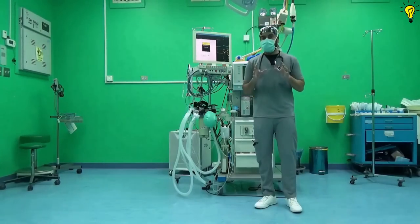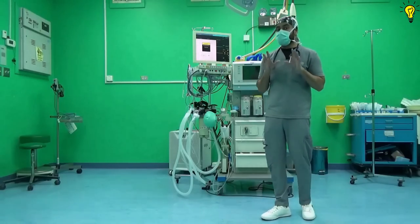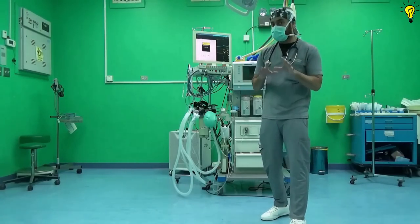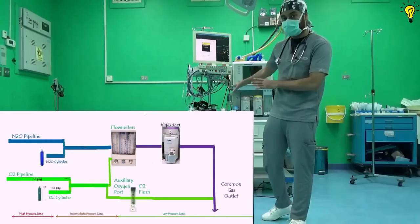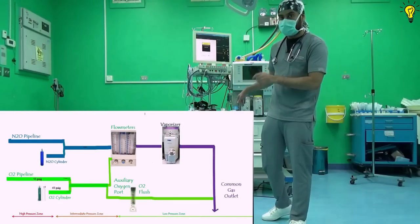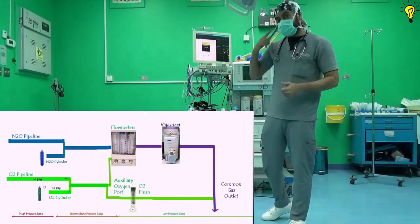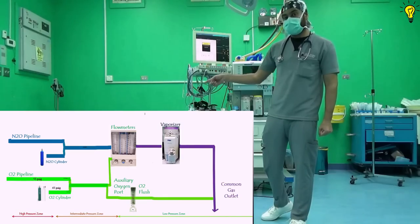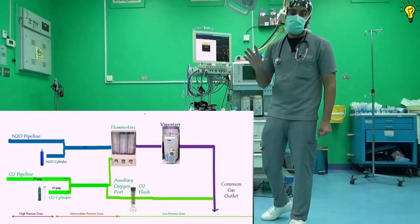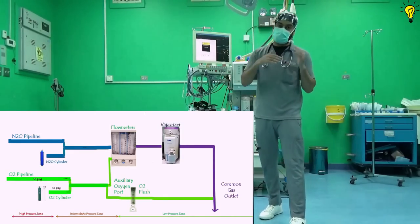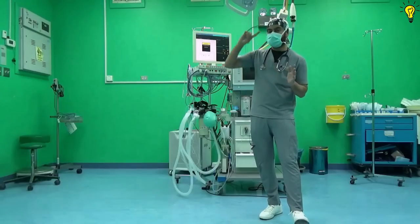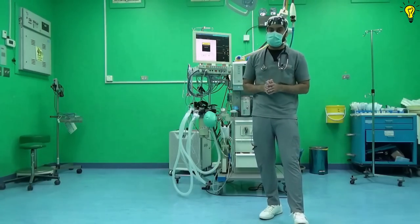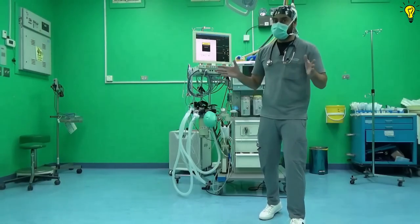In order to logically understand the anesthesia machine checklist, you need to have the basic understanding and working principles of the machine and various components. You need to remember the basic map of the anesthesia machine, which we discussed in the starting episodes of this chapter. I'm going to keep dropping a link on the top right corner for various concepts. Let's begin.